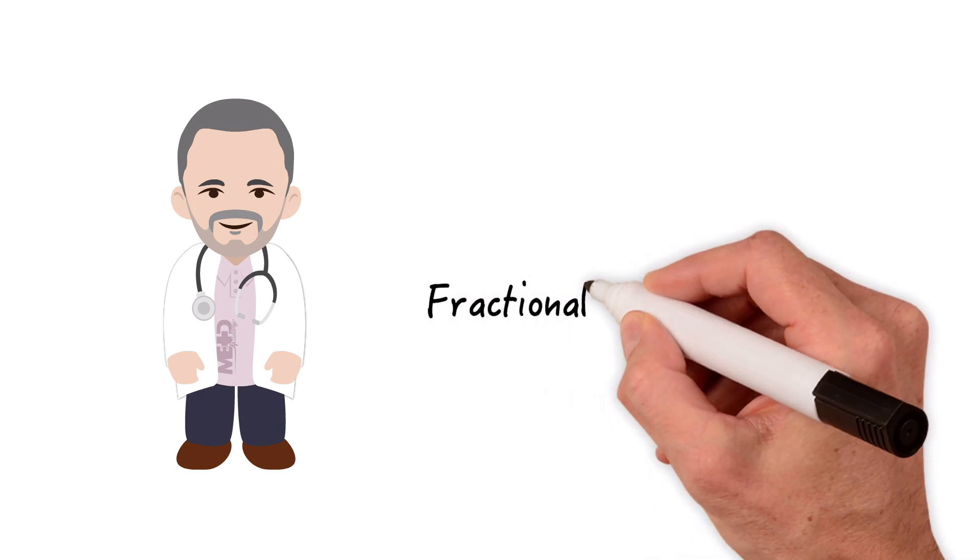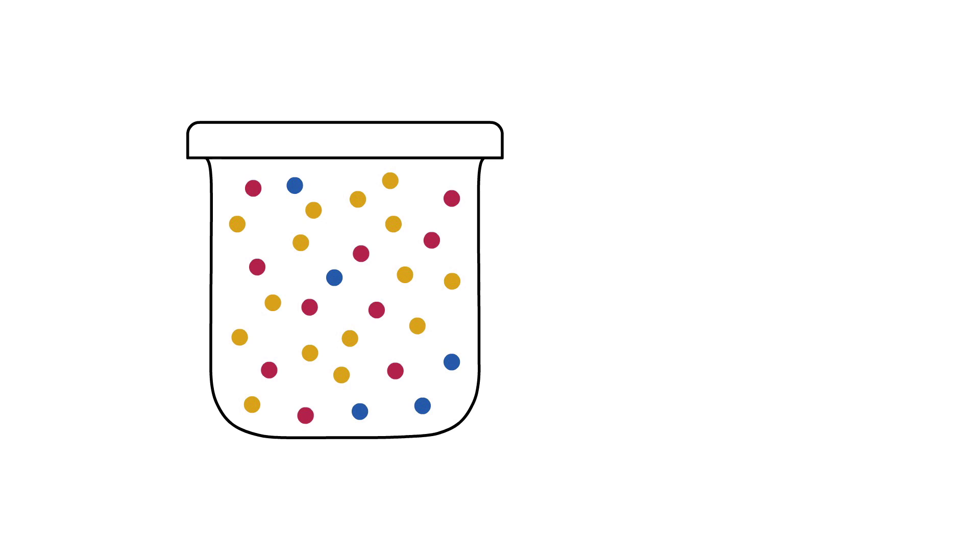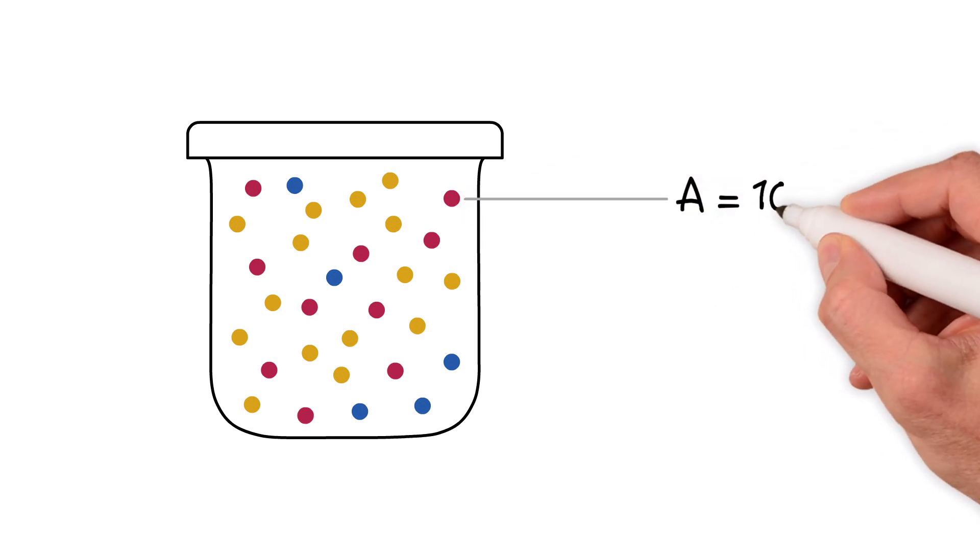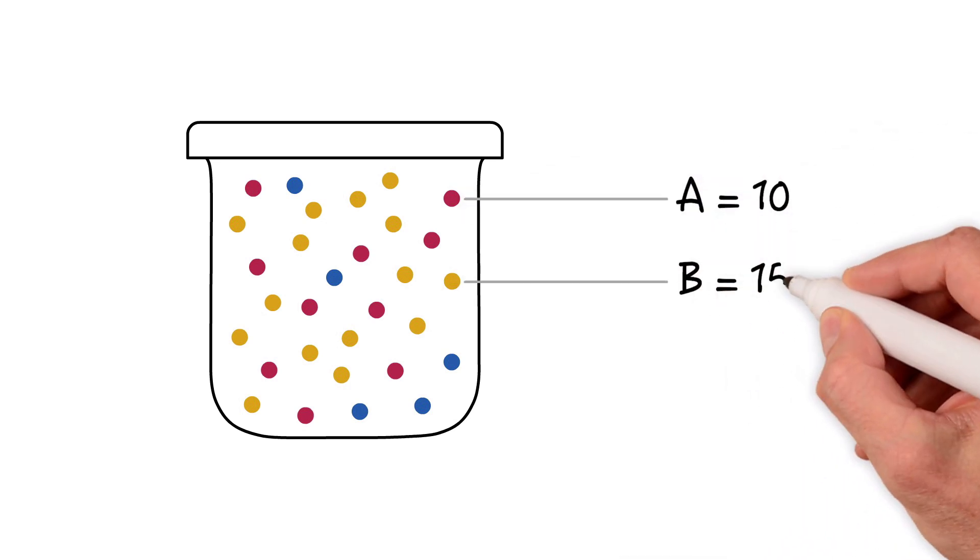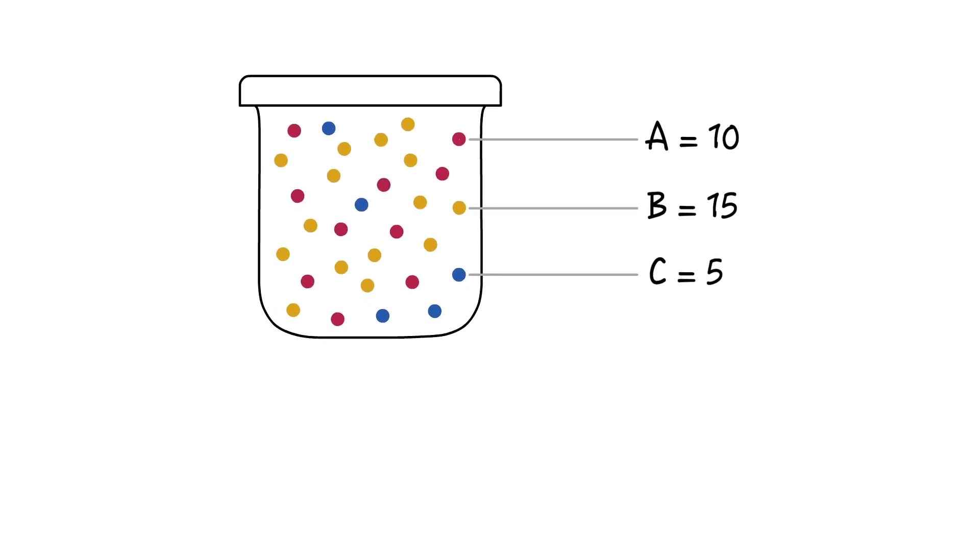First up, fractional concentration. For simplicity, let's look at a mixture of gases A, B and C. We can express the concentration of gas A in the mixture M as a fractional concentration FMA.